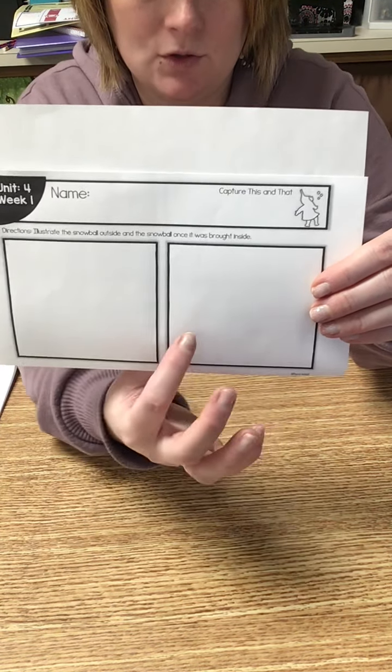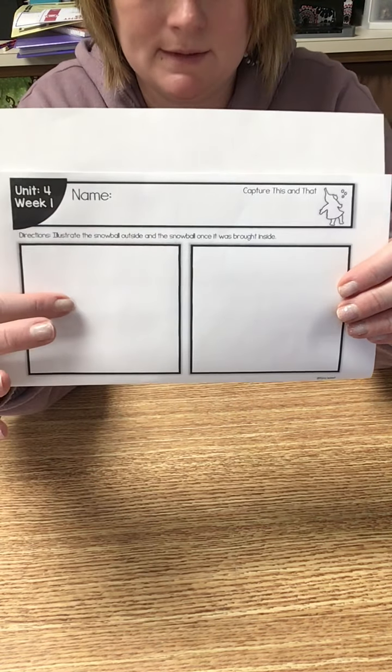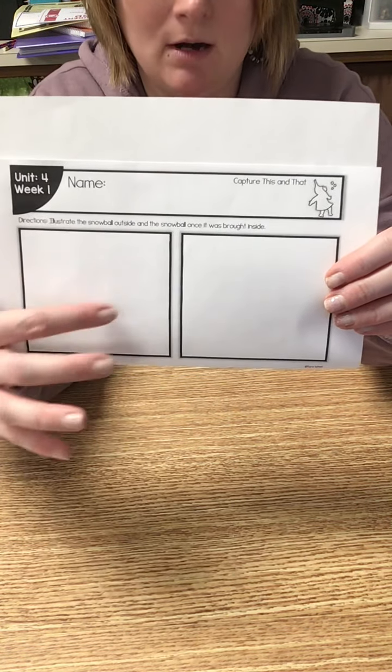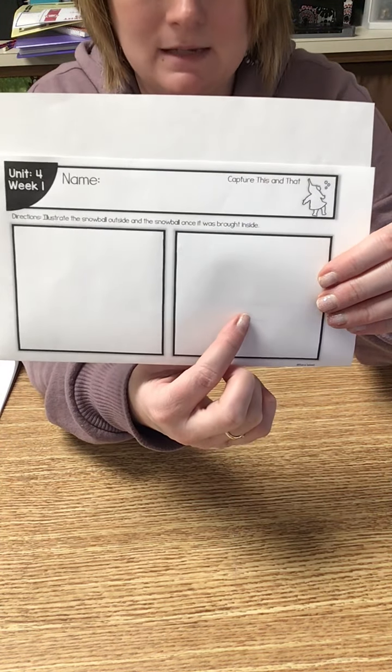So draw what it looked like outside and then draw what it looked like inside. Because what happened to it once it was inside? It melted, right? So you could just draw a puddle of water down here. And when it was outside, it looked like a snowball. So draw what it looked like outside and then what it looked like once it was inside.